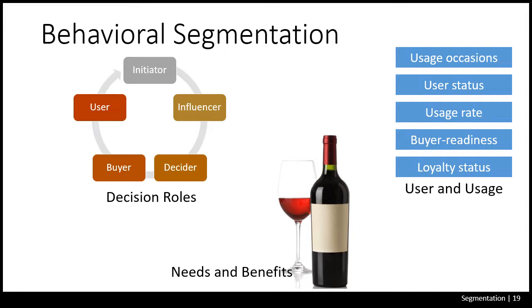Behavioral segmentation divides buyers into groups based on their knowledge of a product, attitude toward and use of a product, or their general response to it. Not everybody who buys a product has the same needs or wants the same benefits. Needs-based or benefit-based segmentation is a widely used approach because it identifies distinct market segments with clear marketing implications. Generally, we play about five different roles in a buying decision: initiator, influencer, decider, buyer, or user.